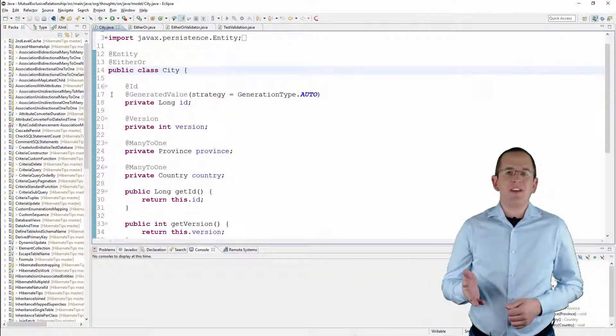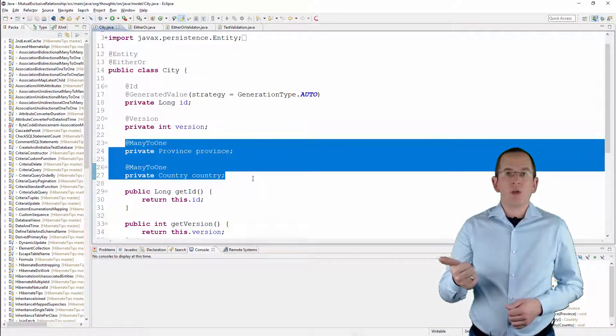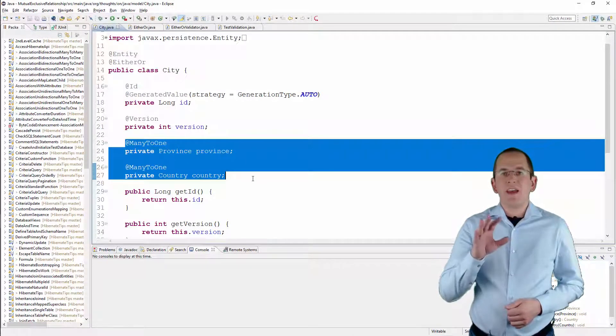Here you can see the city entity. It specifies two many-to-one associations. One to the country and another one to the province entity. As you can see, there's nothing special about the two relationships.